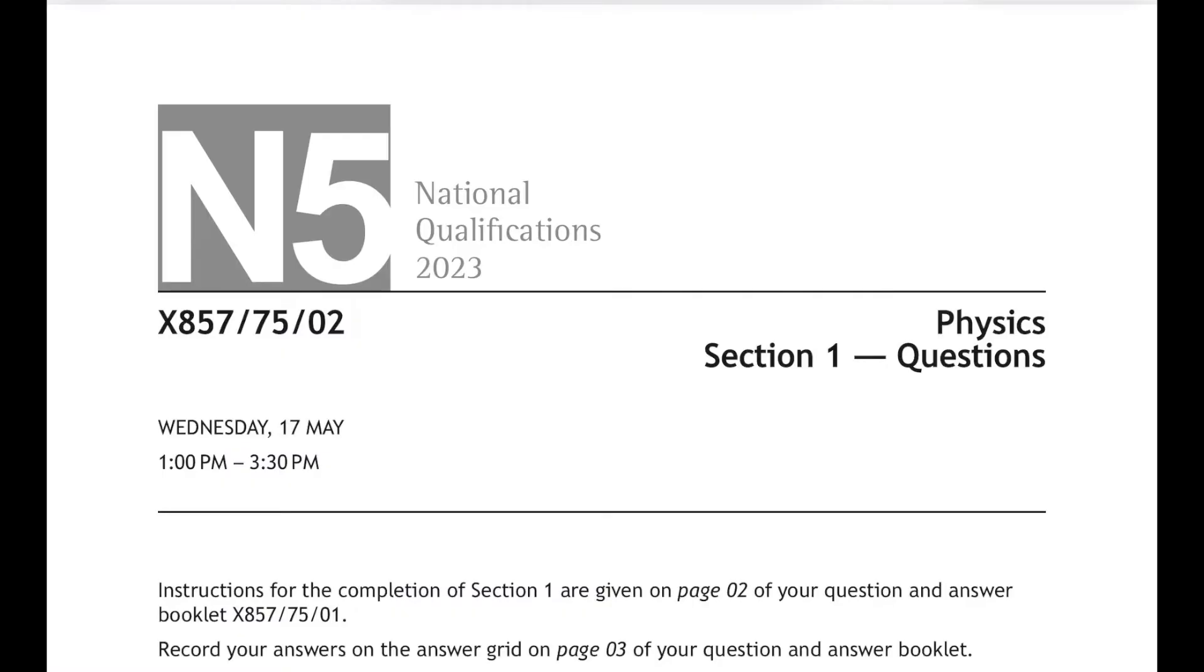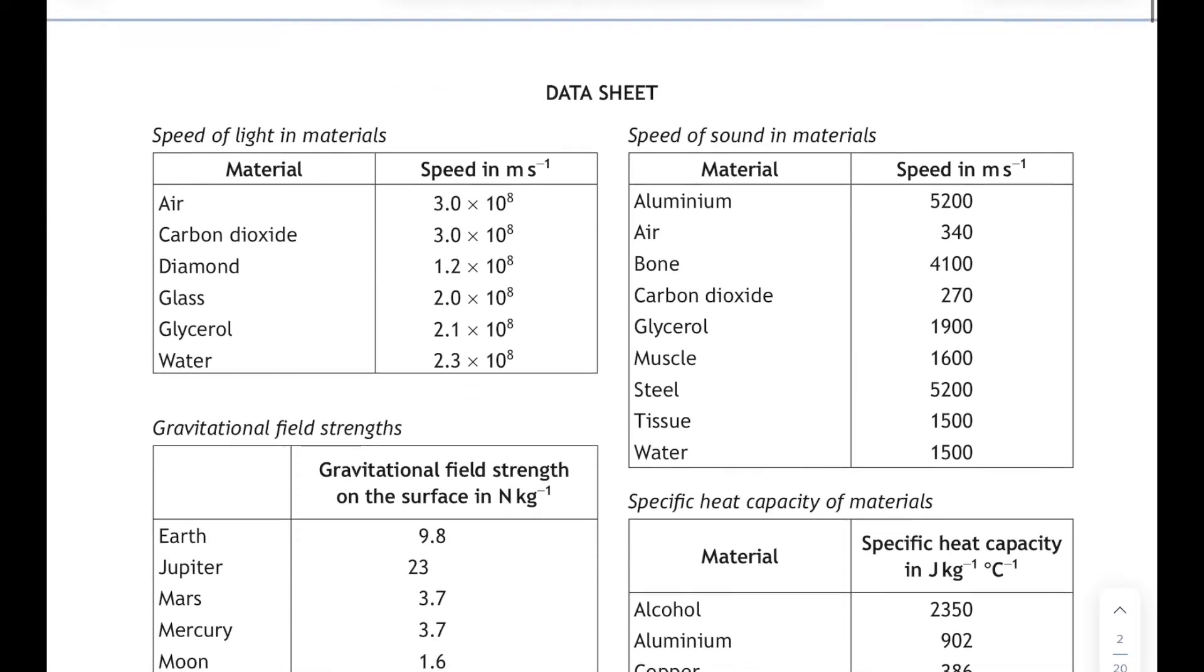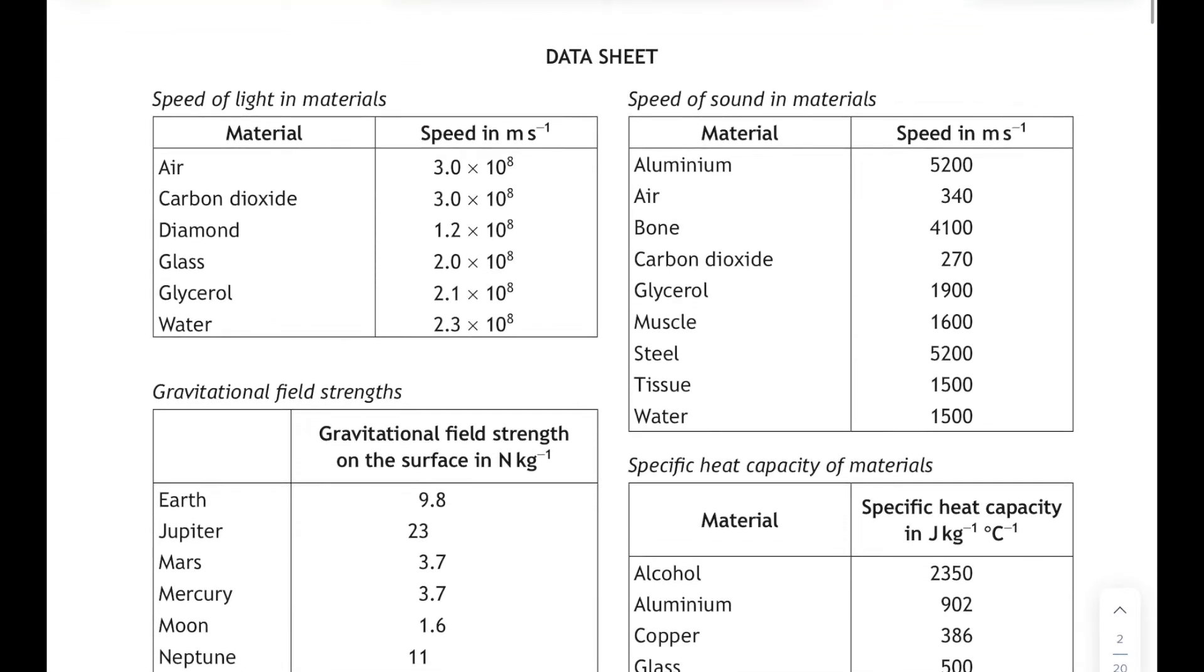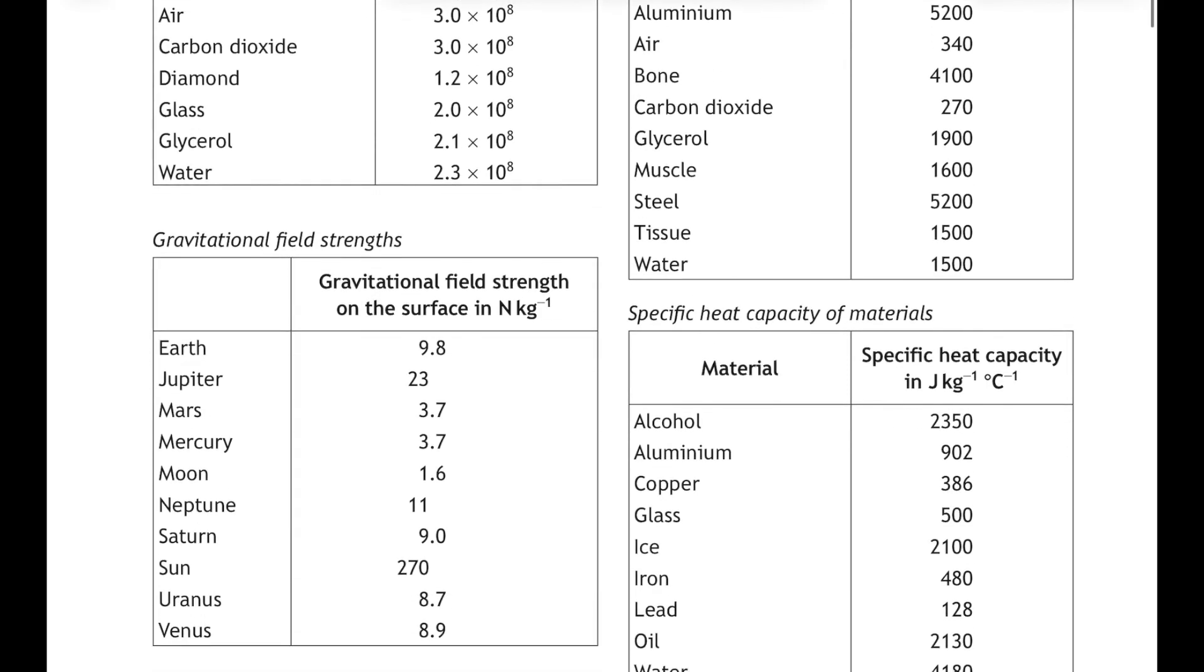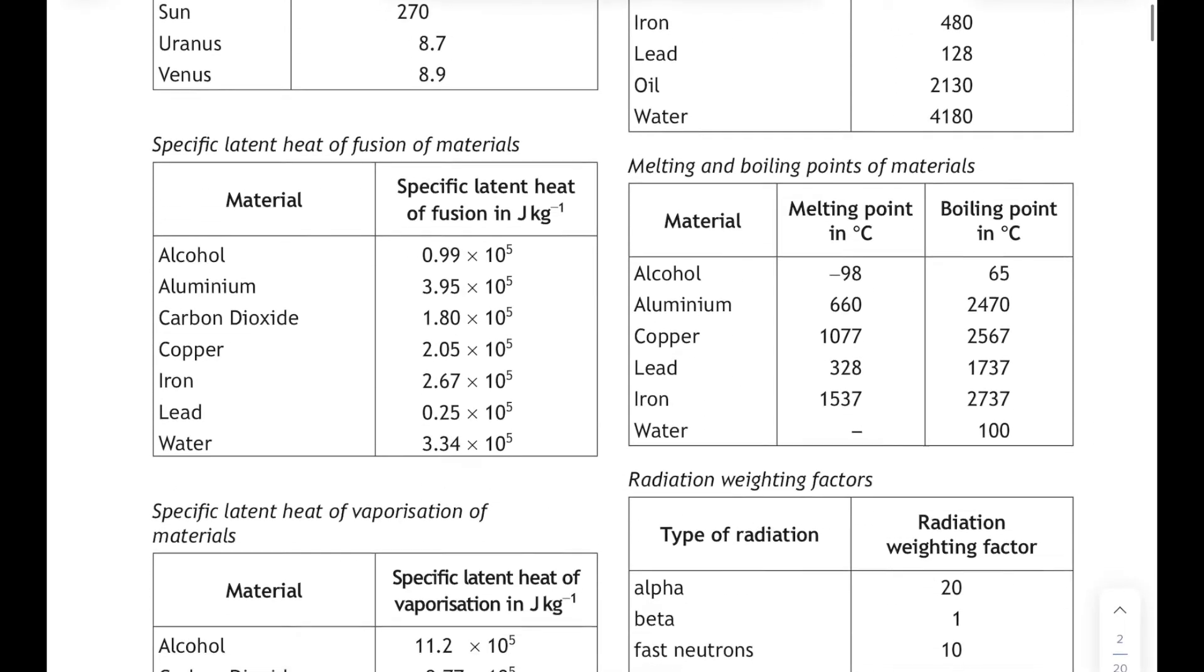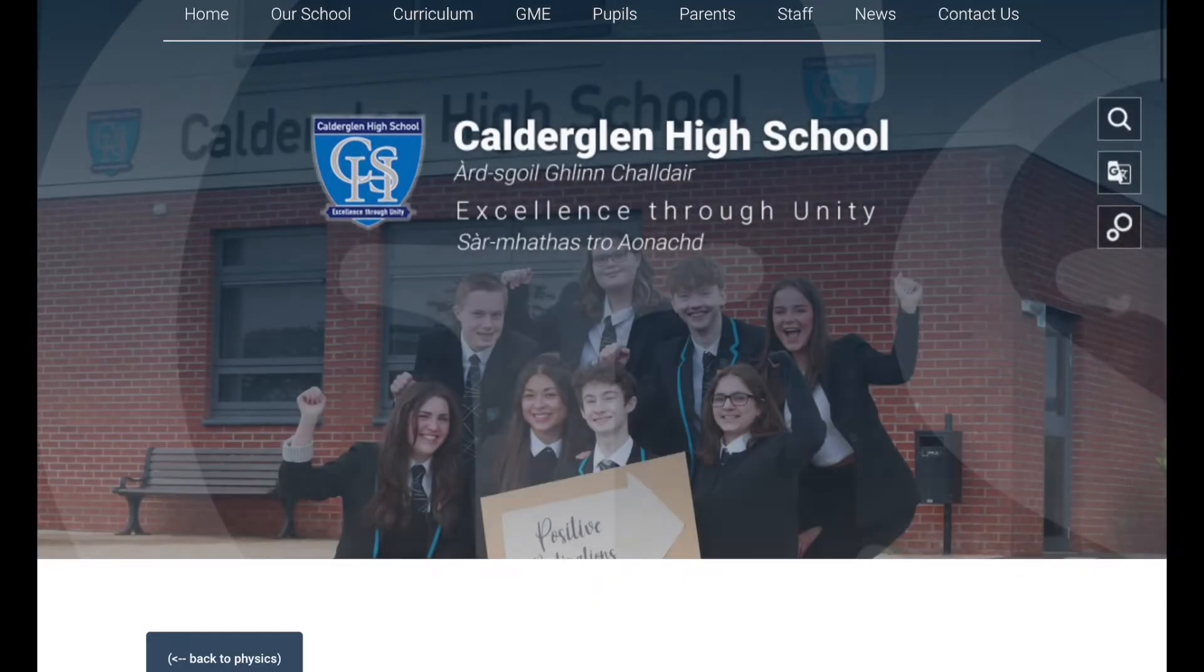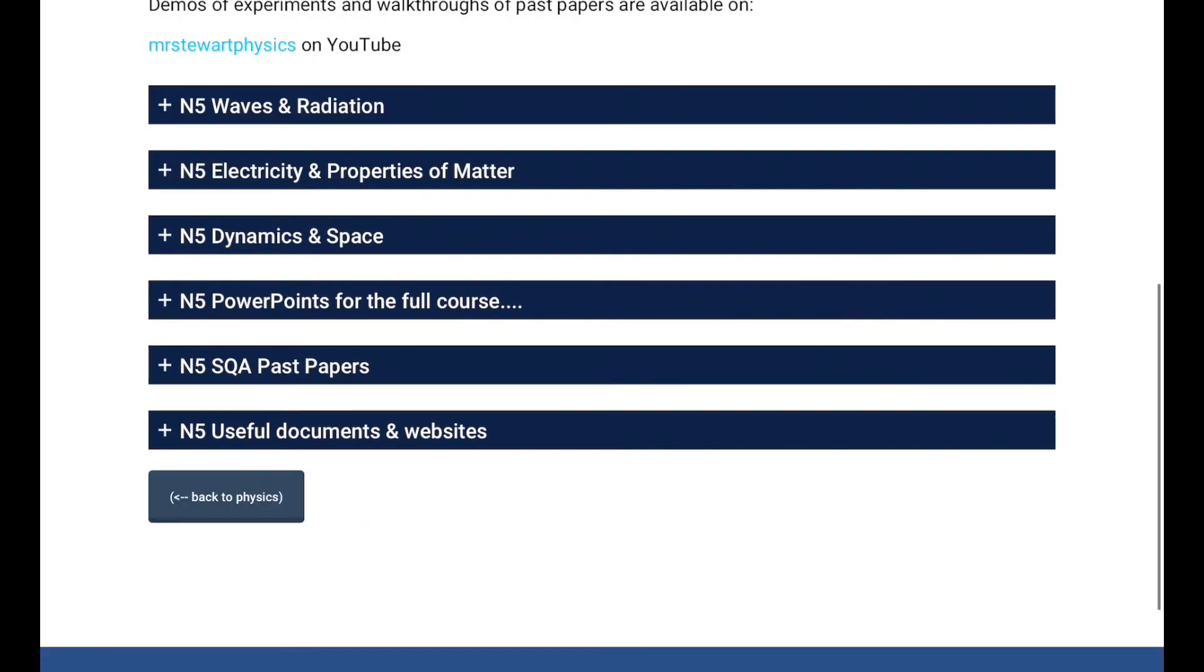Okay, hi folks, this is part two of a look at the 2023 National Five Physics multiple choice paper. The whole paper is two and a half hours, but the multiple choice section should take you about 45 minutes, and hopefully we will get through these questions in about 10 minutes. There's the data sheet where you'll find any of the numbers that you might require and some of the questions.